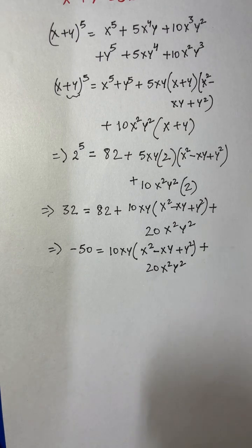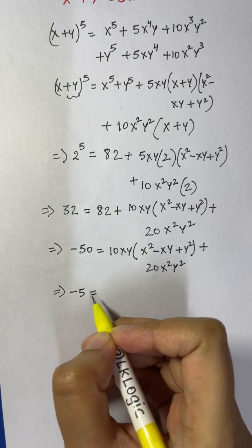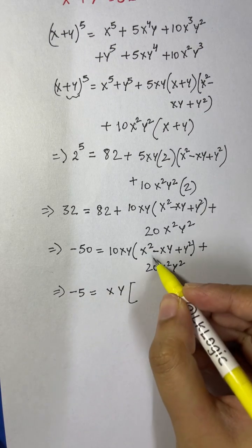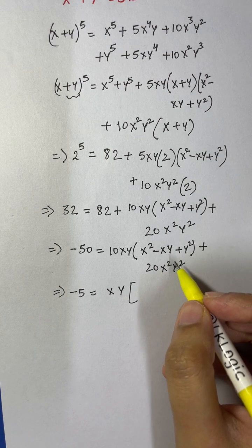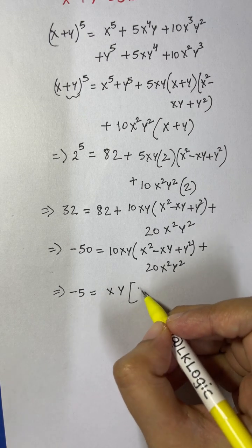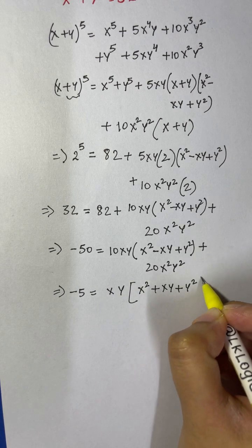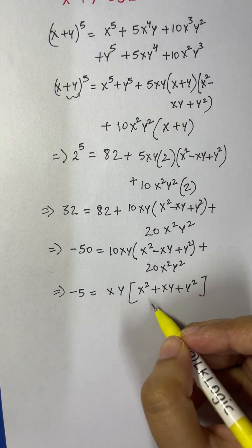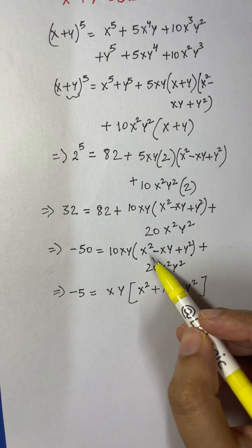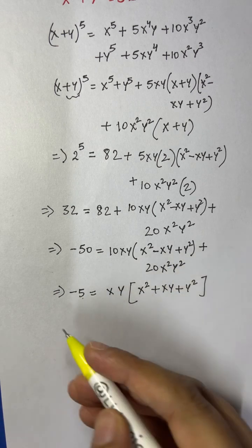Dividing both sides by 10: negative 5 equals xy times (x squared minus xy plus y squared) plus 2x squared y squared. Taking 10xy common from both terms gives negative 5 equals xy times (x squared plus xy plus y squared).